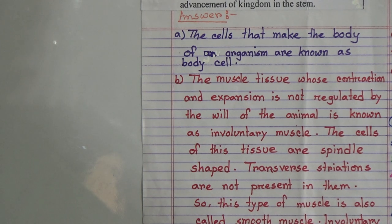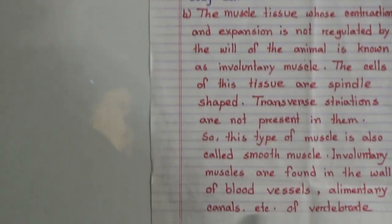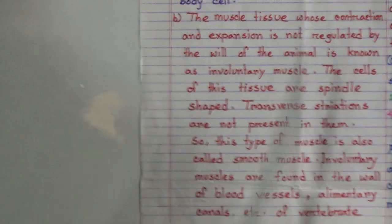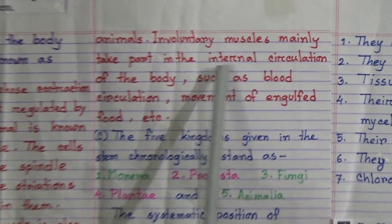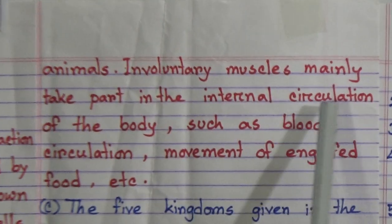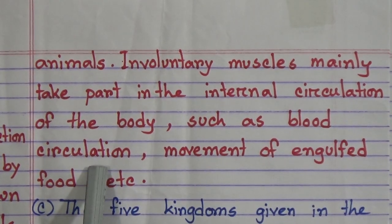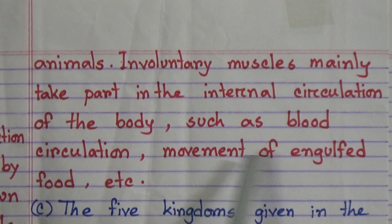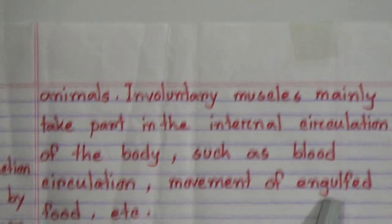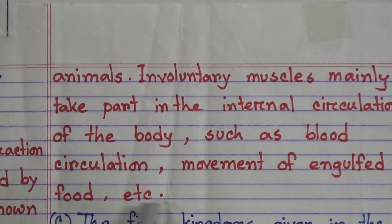Involuntary muscles are found in the walls of the blood vessels, alimentary canals, etc. of vertebrate animals. They mainly take part in internal circulation of the body, such as blood circulation and movement of engulfed food.